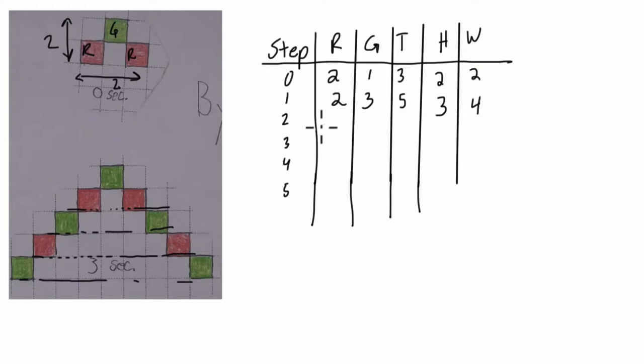Then at step two, that's here now, we add those two red pixels, so we have four red pixels, we still have the three green, and we have a total of seven pixels, with the height of one, two, three, four, and the width of six.